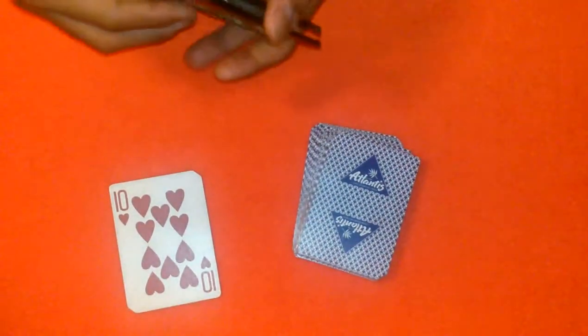First of all, before the trick begins there's a slight setup involved. You're going to need to pick a card, say you pick the ten of hearts, and you're going to write a prediction in the beginning.